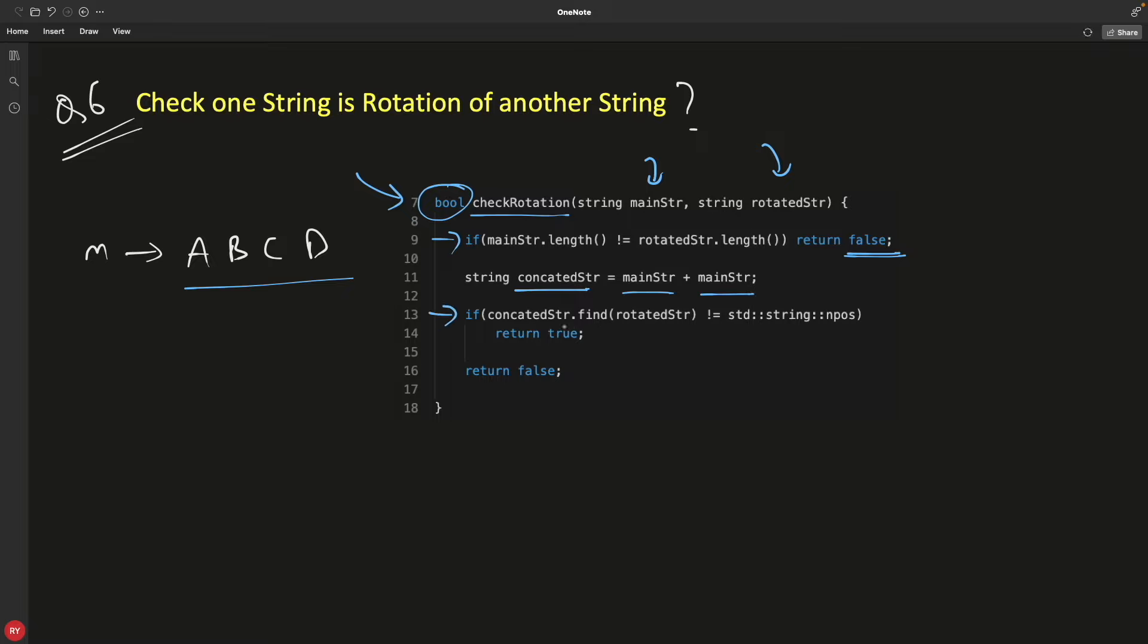We have this concatenated dot find this rotated str. So we'll find this rotated str in this concatenated string. If we can find, this is the way you will check. Meaning, if it is returning null, meaning if it is not able to find, then it will return this npos. And if it is returning npos, then this condition is not going to get true.